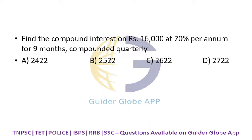Find the compound interest on rupees 16,000 at 20% per annum for nine months compounded quarterly.